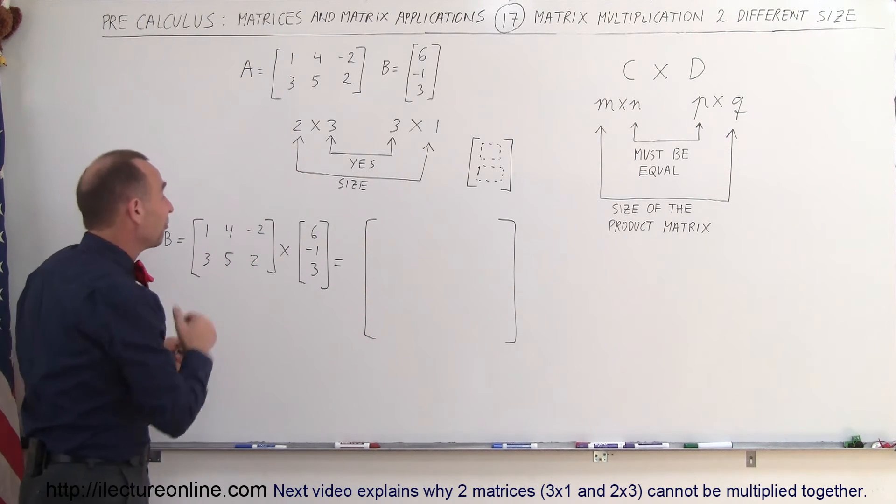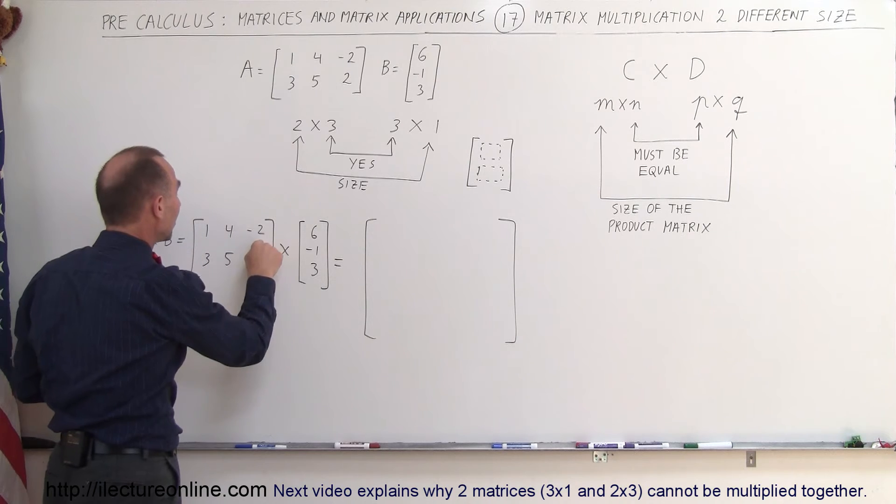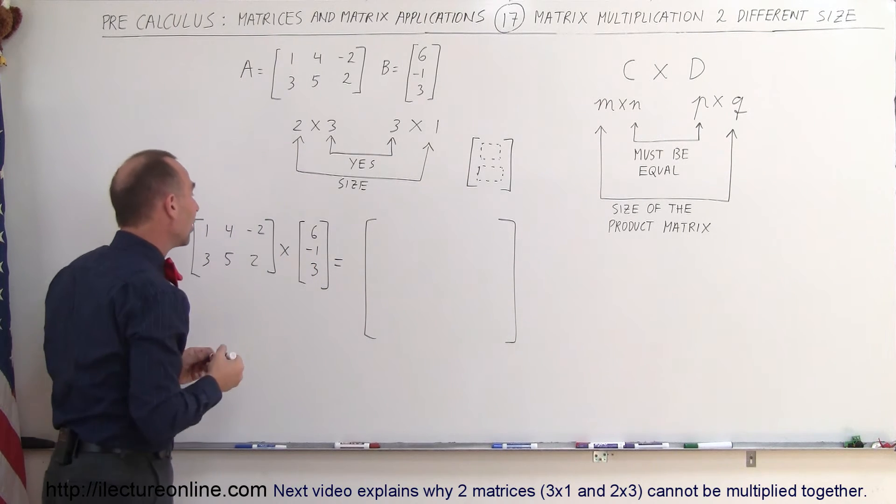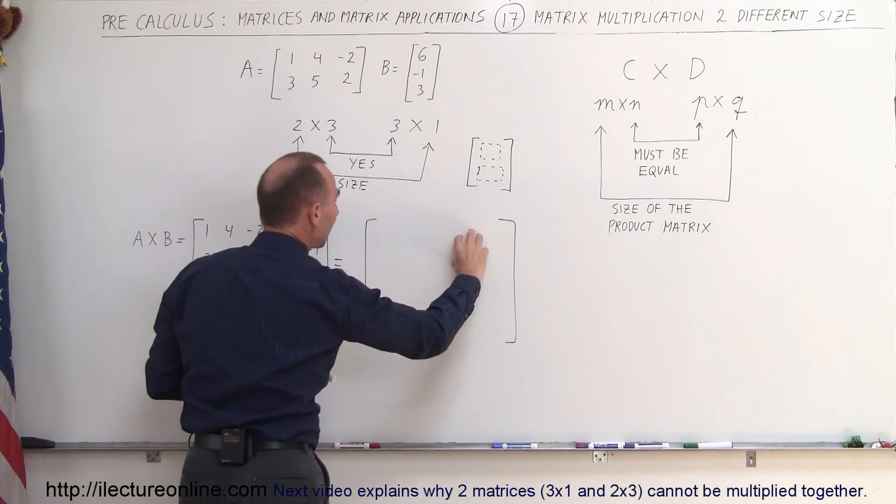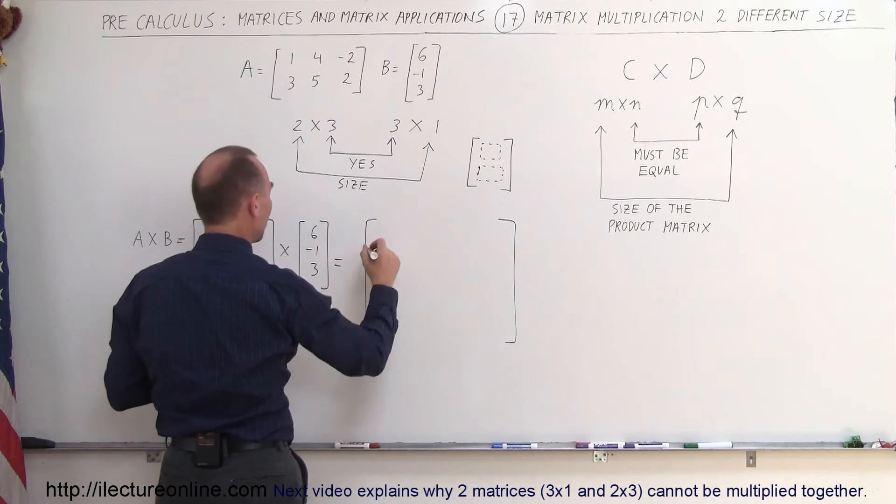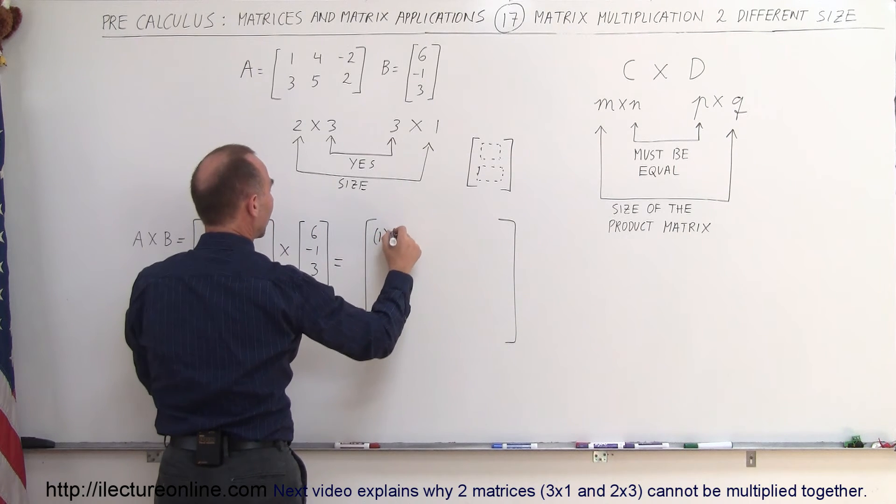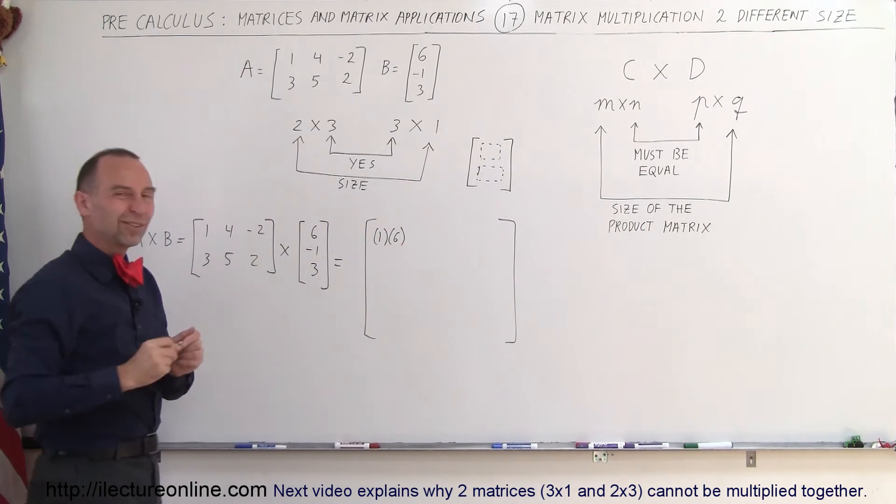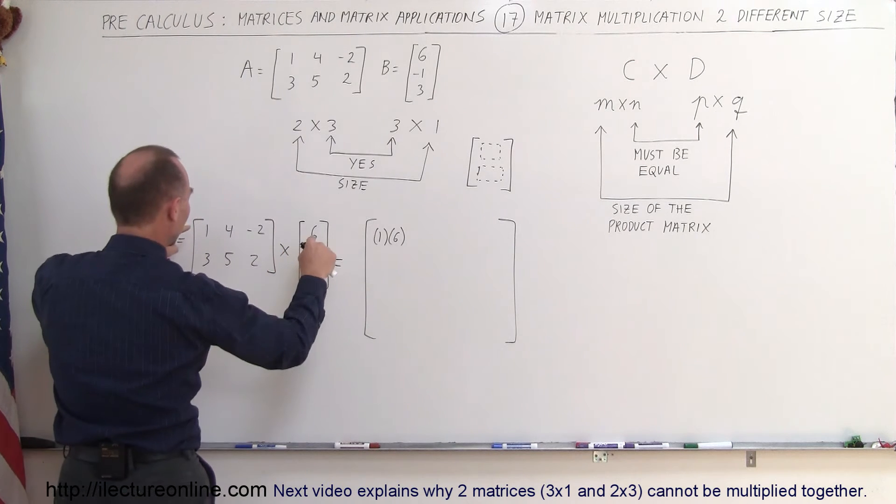Of course, there's only one column, but it's the first column. So we multiply these three elements times those three elements, and we get the following for the top element of the resulting matrix. We get 1 multiplied times 6, and again, sometimes it helps to do like this with your pencil or your fingers.